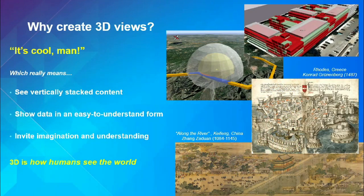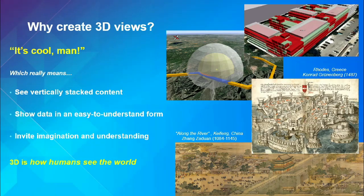Before you even start making a 3D map, you should ask yourself why. We ask people why they make 3D views, and nearly everybody says 'because it's cool.' What they really mean is that you can see vertically stacked content. That's the number one thing that 3D does that 2D doesn't: you can see everything that's stacked above itself in one view.